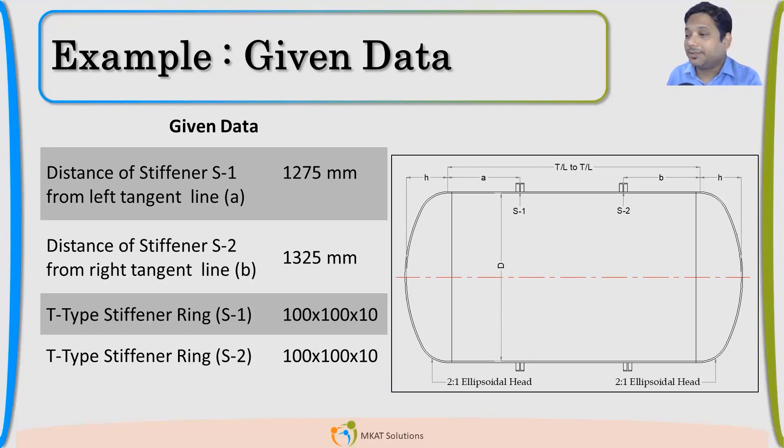Just one more question here. For fabrication point of view, what will be your preference? Whether you will take a T stiffener which are standard or you will make this stiffener from plate? What will be your preference? Imanashu is saying plate. What about others? Everyone is saying plate. Why not standard? Anybody is not there with the standard? Amol is saying standards also.